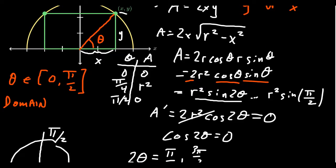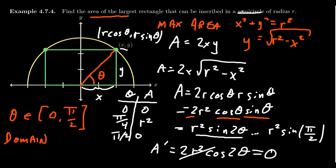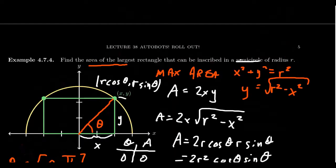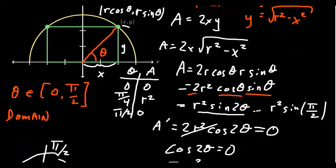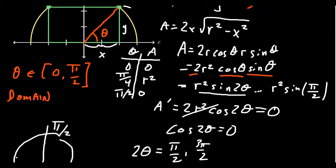Now, what did the question ask? Did it want to know the optimal area or did it want to know the dimensions? Find the area of the largest rectangle. So, okay. So, the optimal area is going to be r². And it's obtained when the angle is π/4.